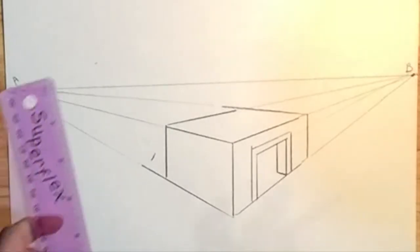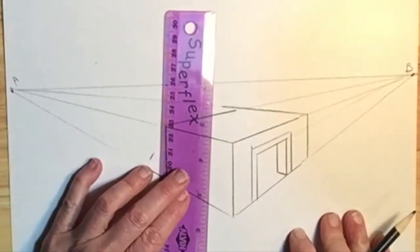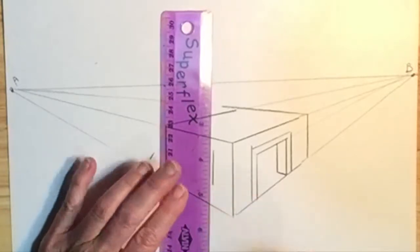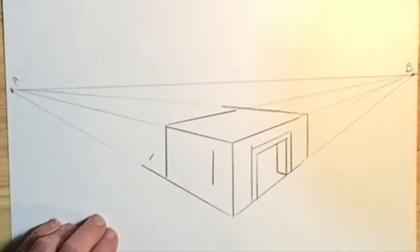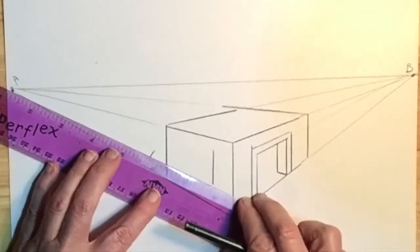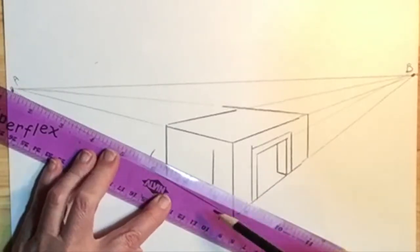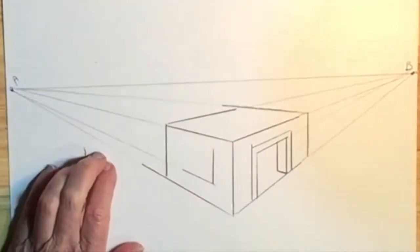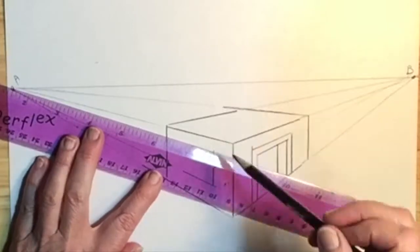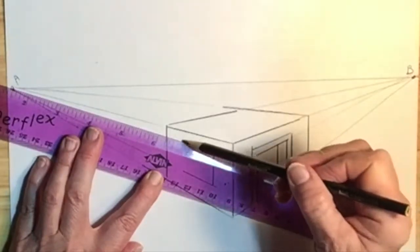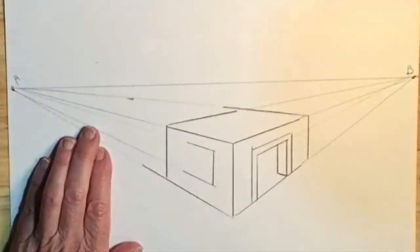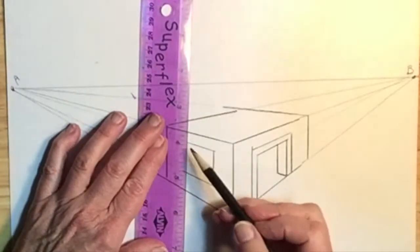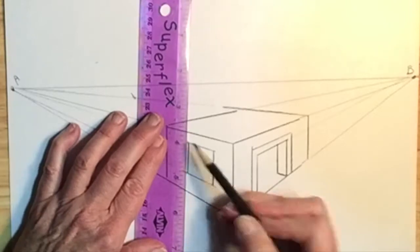I'll add a window in the A side, so I start with the vertical line, the height of the window. Then I draw lines from the top and bottom of that line to point A using my ruler. Then I finish off the basic window by adding a line parallel to the first line, so I have a complete window.